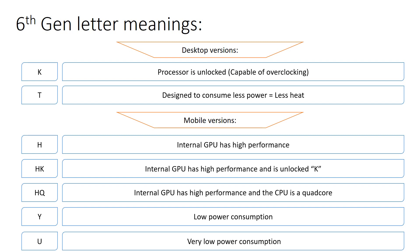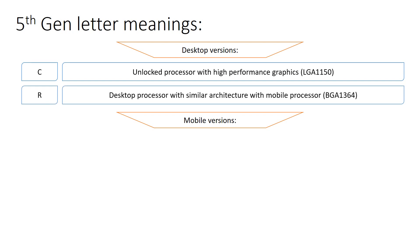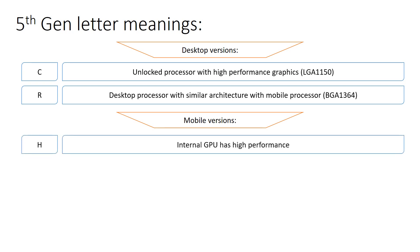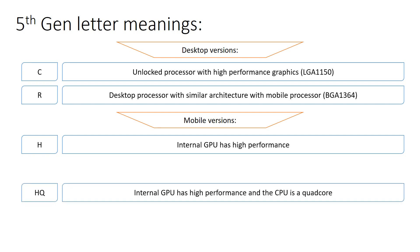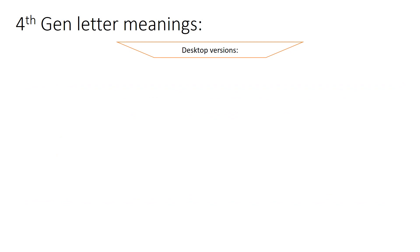For the 5th generation desktop versions, C stands for the processor being unlocked with high performance graphics — but only for the LGA 1150 socket type, which is the socket your CPU fits into on your motherboard. R refers to a desktop processor with similar architecture to the mobile processor of that socket. For mobile: H means the iGPU is high performance, HQ means high performance iGPU with a quad core CPU, and U means very low power consumption.